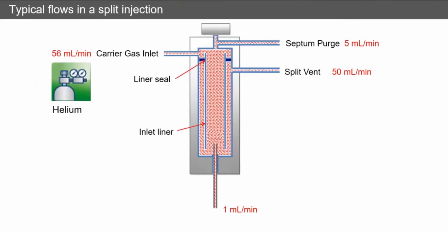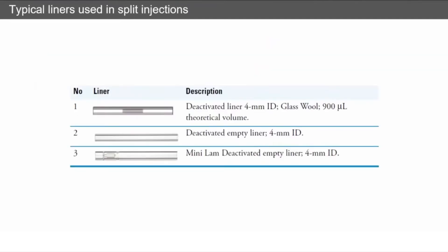And then we've got only 1 milliliter per minute going down our column, which is a tiny percentage of the total flow. All of the flow within the column is controlled by the pressure in the injector. There is no flow restrictors or anything after the inlet, and that's how we control it.